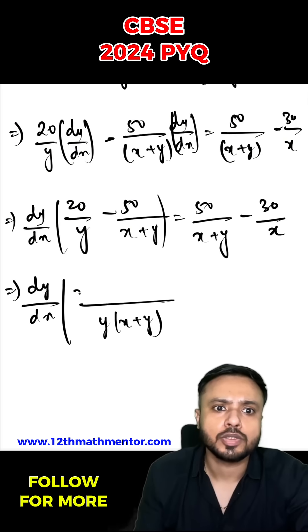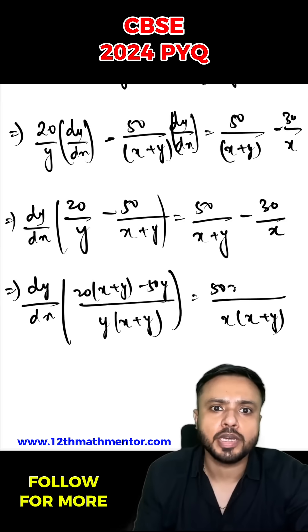So dy upon dx, y into x plus y. So 20 into x plus y minus 50 y equals to x into x plus y. 50 x minus 30 into x plus y. So this x plus y and x plus y is gone.